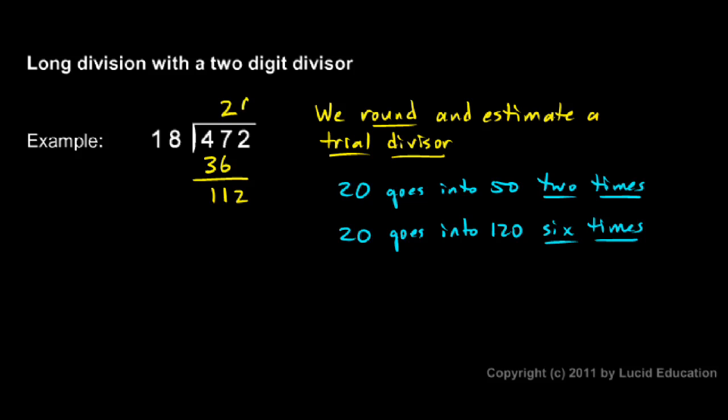So I'm going to try a 6 up here. And 6 times 18, I'll work this out. 6 times 8 is 48. So I put my 8 there and carry the 4. 6 times 1 is 6 plus 4 is 10. And I can subtract. 112 minus 108 is 4.